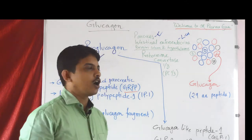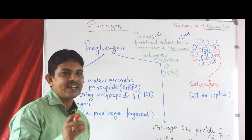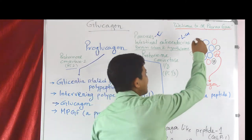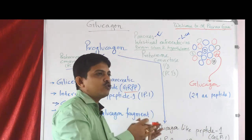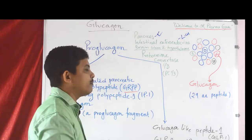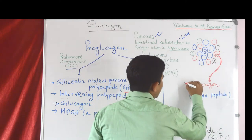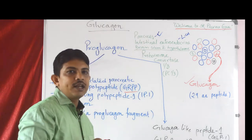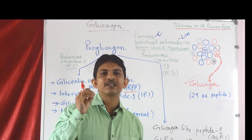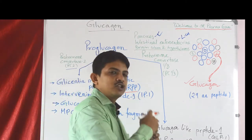Glucagon is a 29 amino acid peptide secreted from the alpha cells of the pancreas. The islets of Langerhans are composed of almost 15 to 30 percent alpha cells and 60 to 75 percent beta cells. The alpha cells are responsible for secretion of glucagon, which plays an important role in maintaining glucose homeostasis by increasing the blood glucose level.